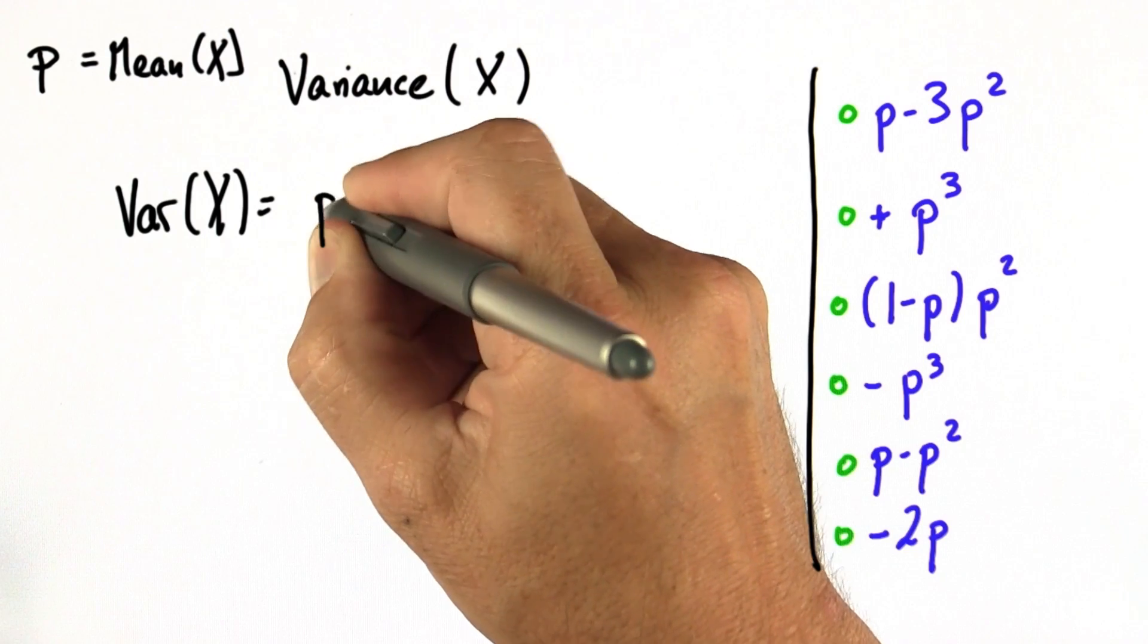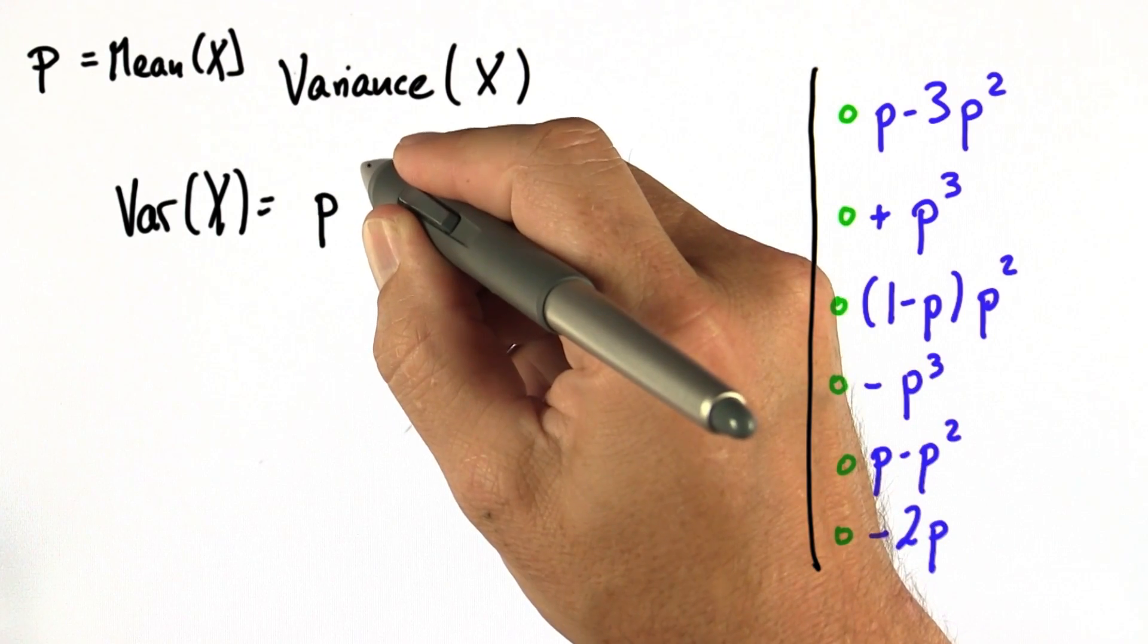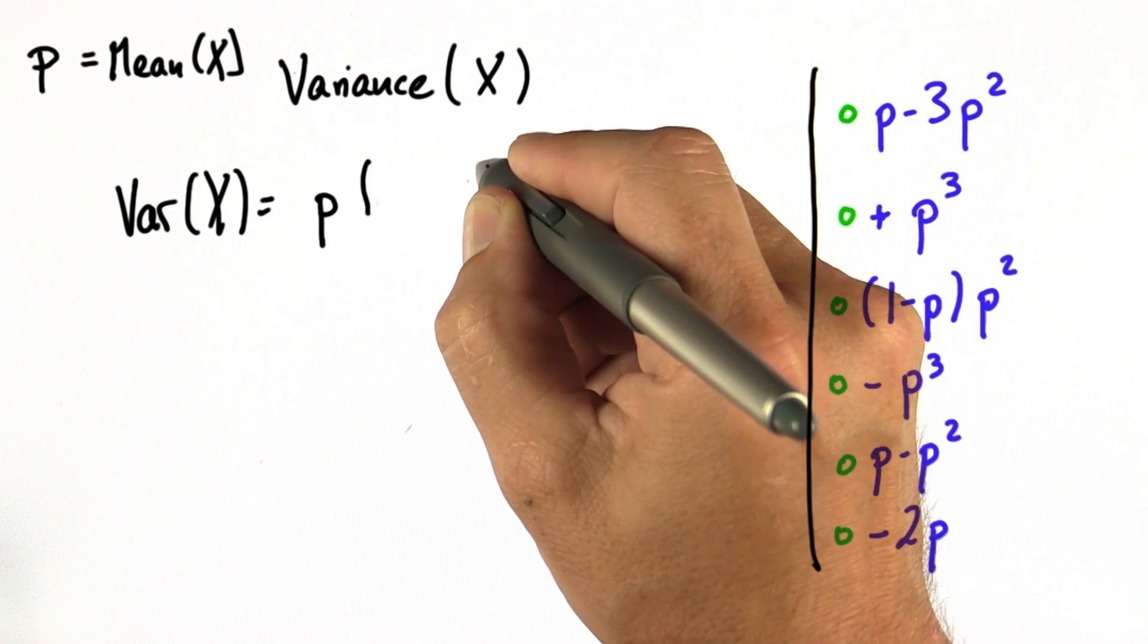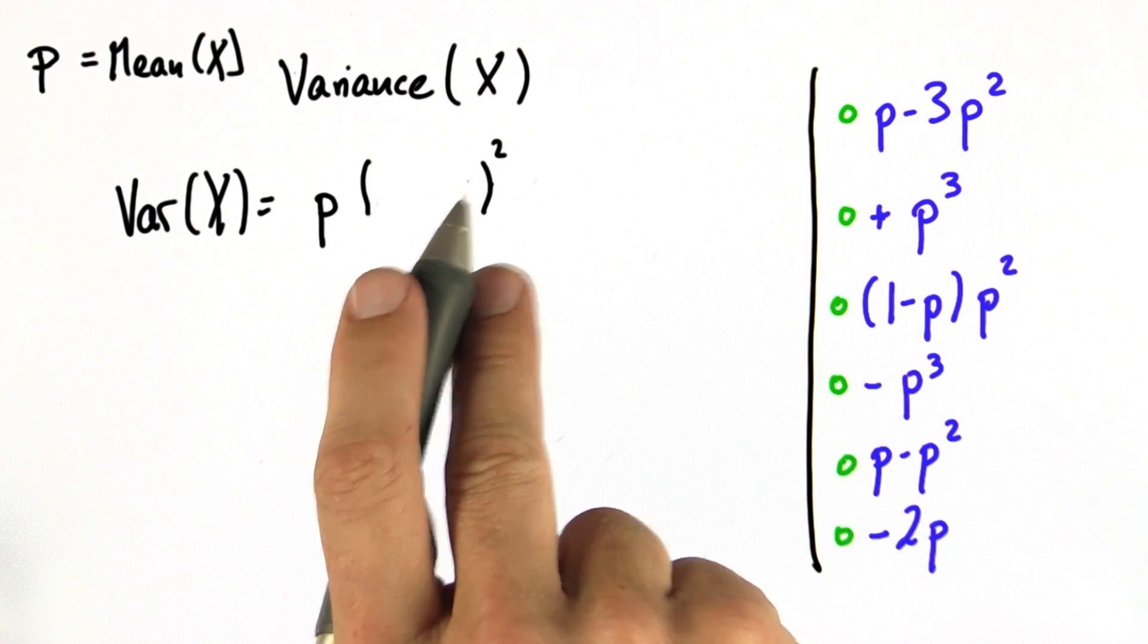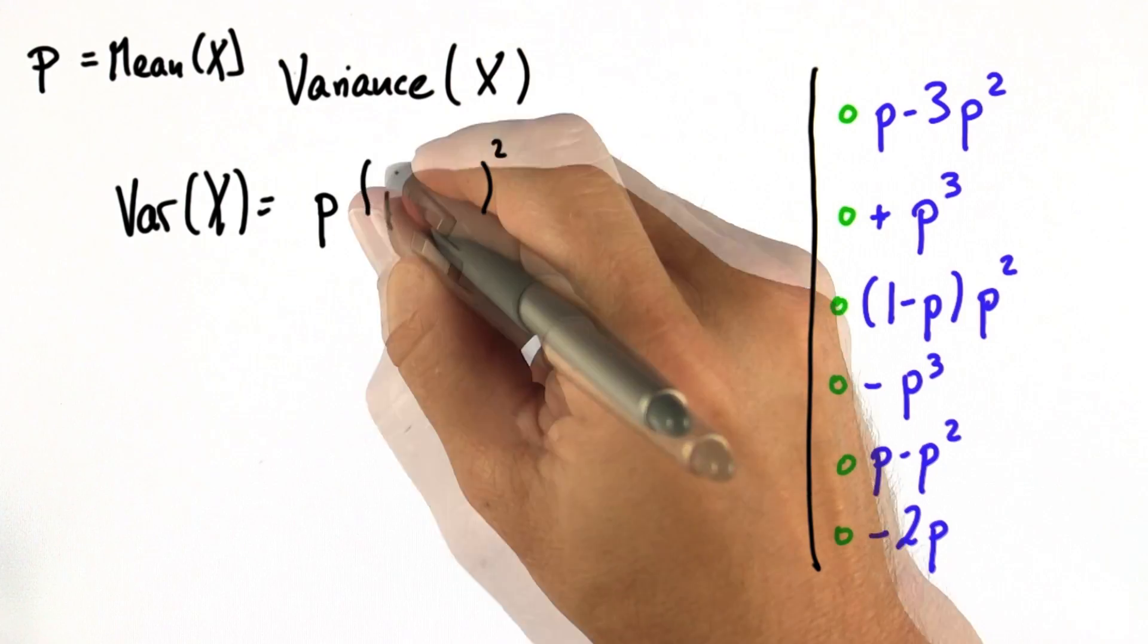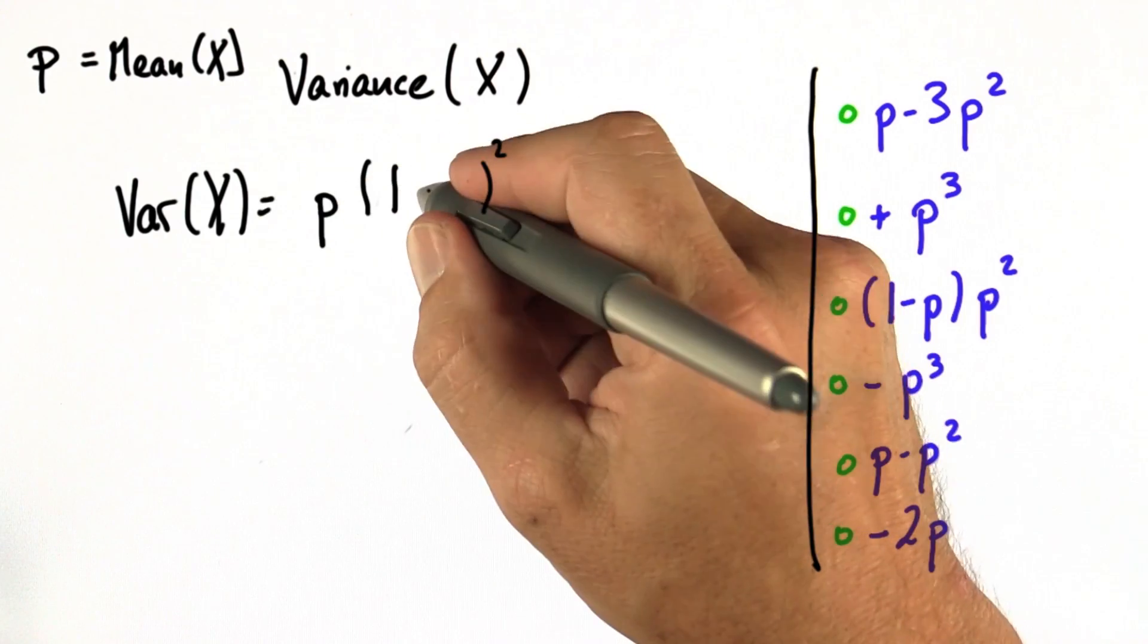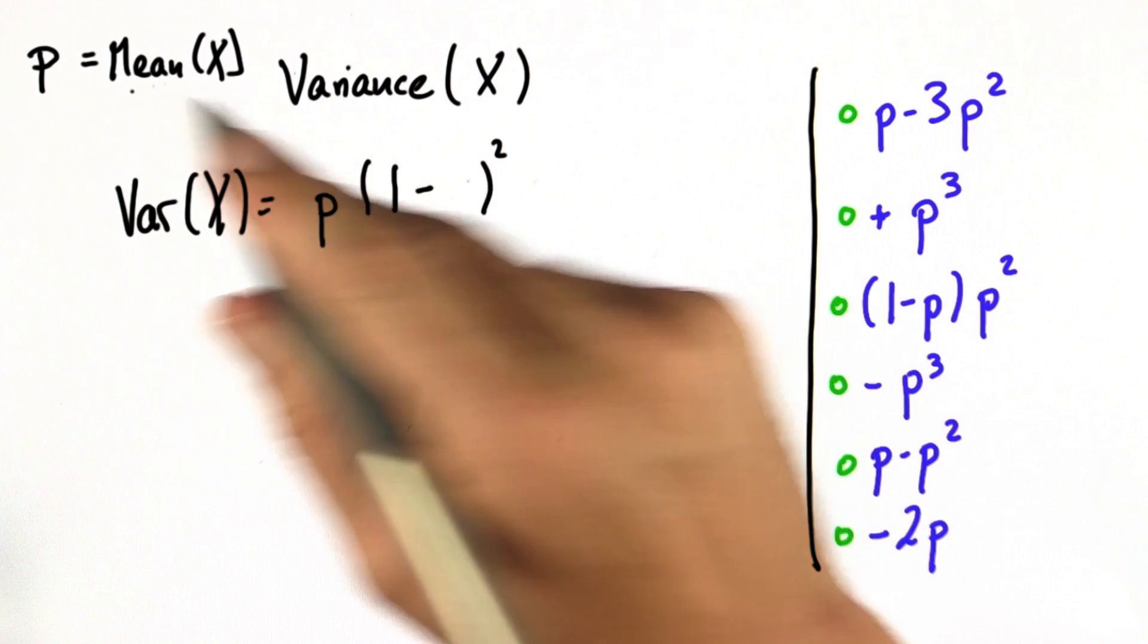we find that the probability for heads is p. And if heads is chosen, then the variance is the quadratic difference of the actual outcome, which is one for heads, minus the mean, which equals p.